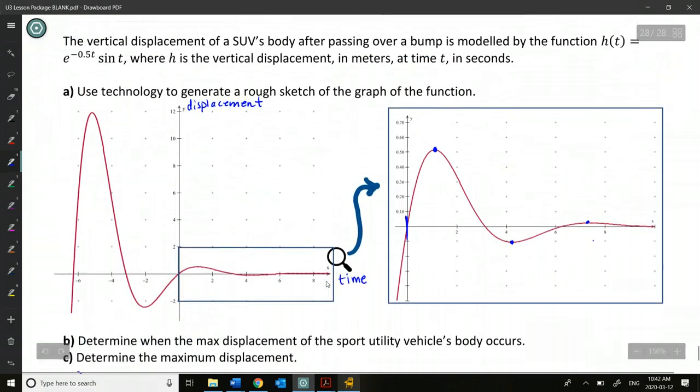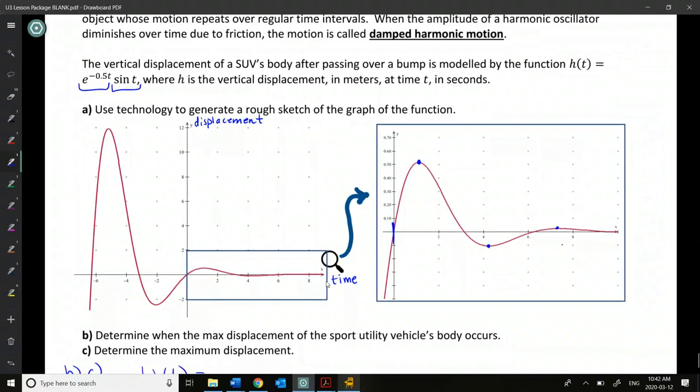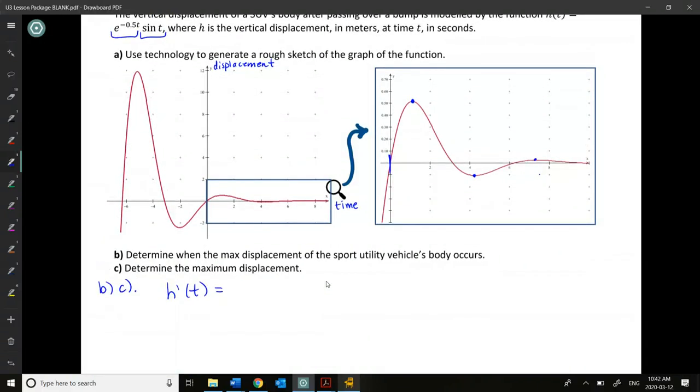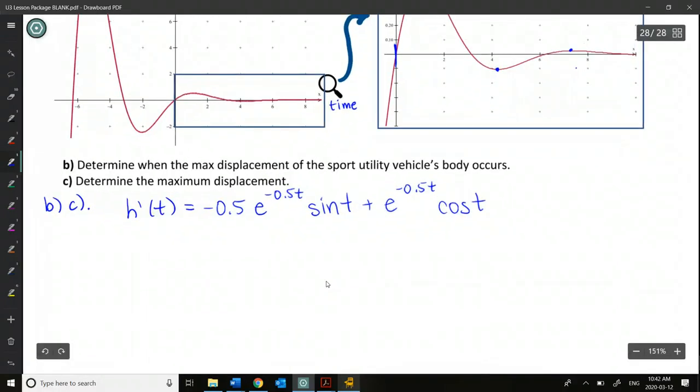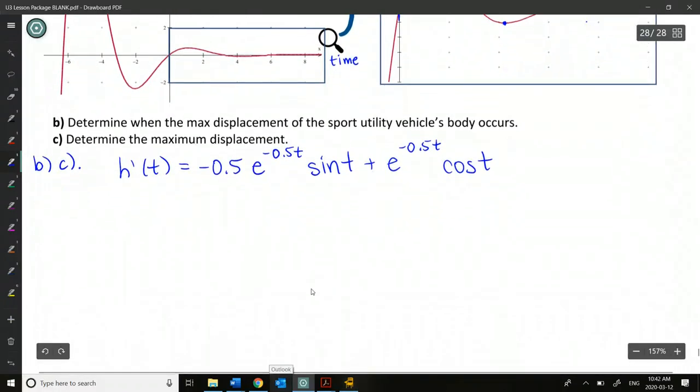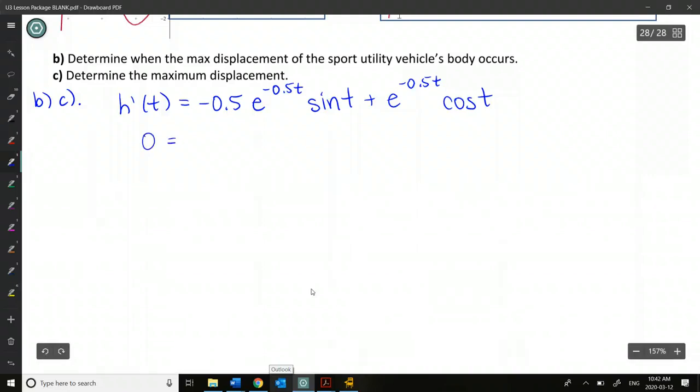So in order to figure out a maximum of this function, maximum displacement, what do we need? We need the derivative of the displacement function, so we need to find h prime at t. Now this is an exponential function multiplied by a trig function. So we need to use product rule. So we're going to do derivative of the first. Just zoom out a little bit here. Derivative of the first is negative 0.5 times e to the negative 0.5 t. Okay, so taking the derivative of e, we get e back and then we multiply by the derivative of the exponent times the second plus the first times the derivative of the second, which is cos t.